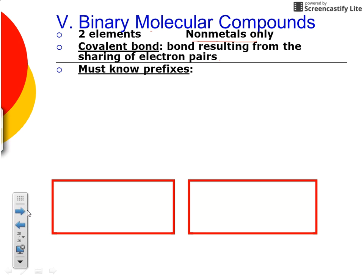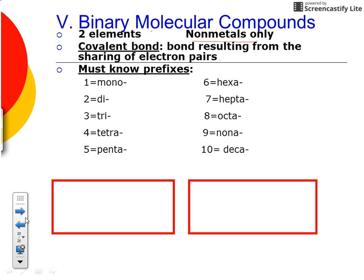In order to name molecular compounds, we must know our prefixes, and these are pretty simple. For one atom, we use mono; for two, di; for three, tri; for four, tetra; for five, penta — think of a pentagon; for six, hexa; for seven, hepta; for eight, octa; for nine, nona; and for ten, deca. These are the prefixes we use when naming molecular compounds — again, only when you have non-metals present.